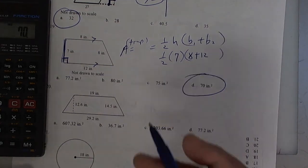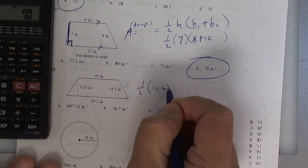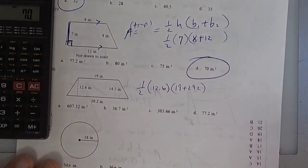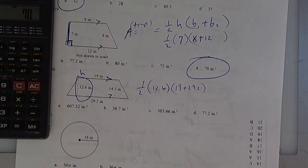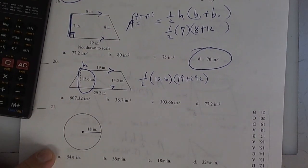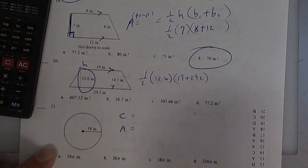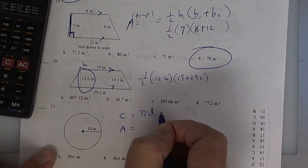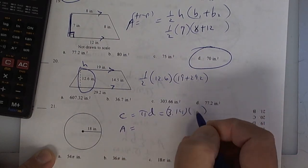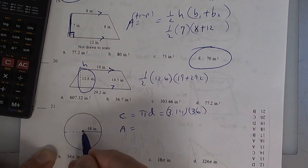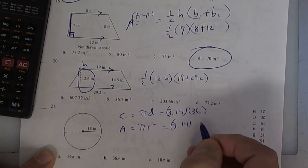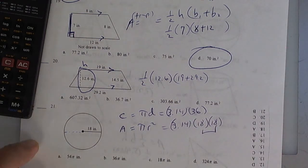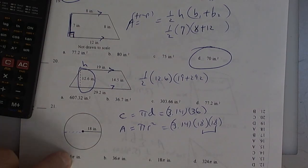Let's set up the next one — I won't work it, just set it up. It's 1/2 the height times the sum of the two bases. The height goes from parallel to parallel — the other two sides are called legs. For the circle: circumference is pi times diameter, so 3.14 times 36. Area is pi radius squared: 3.14 times 18 times 18. You've got to multiply these by pi to check it.